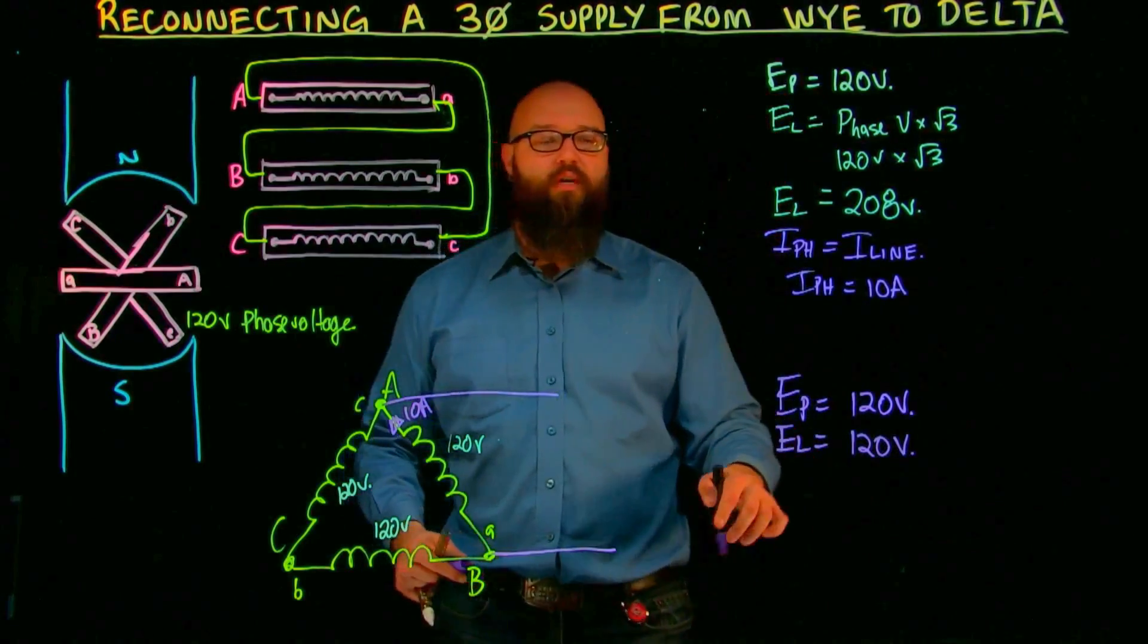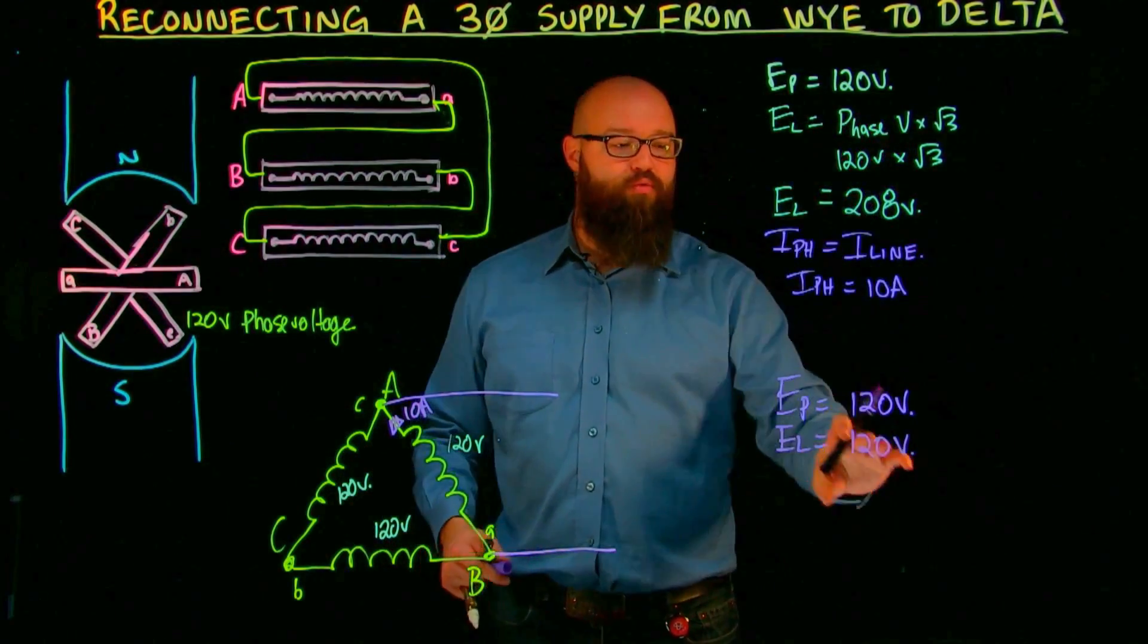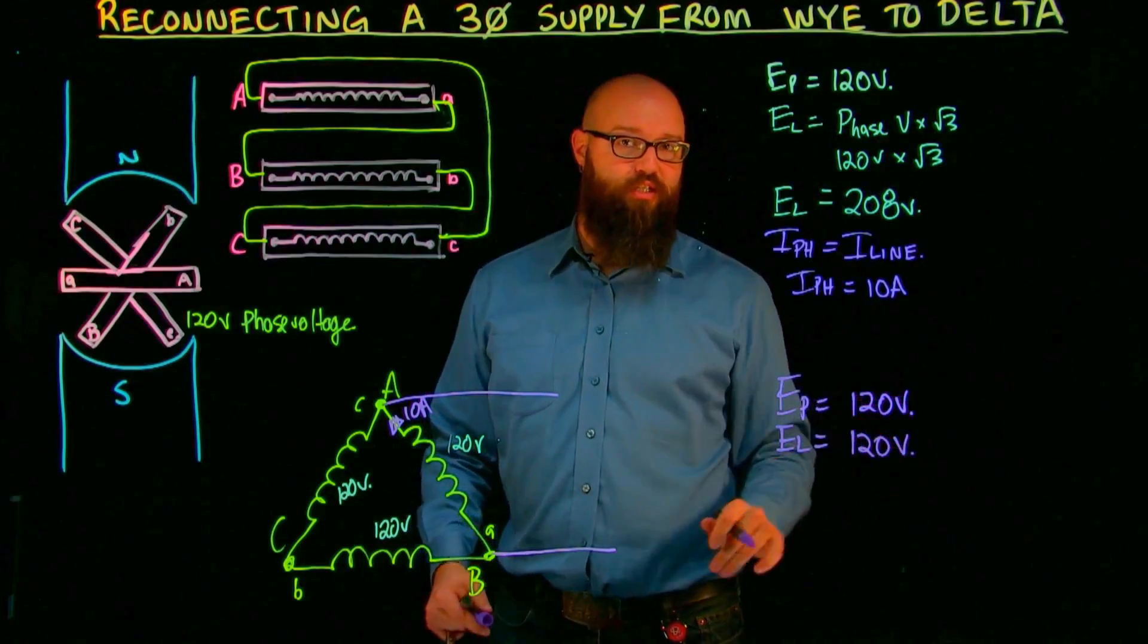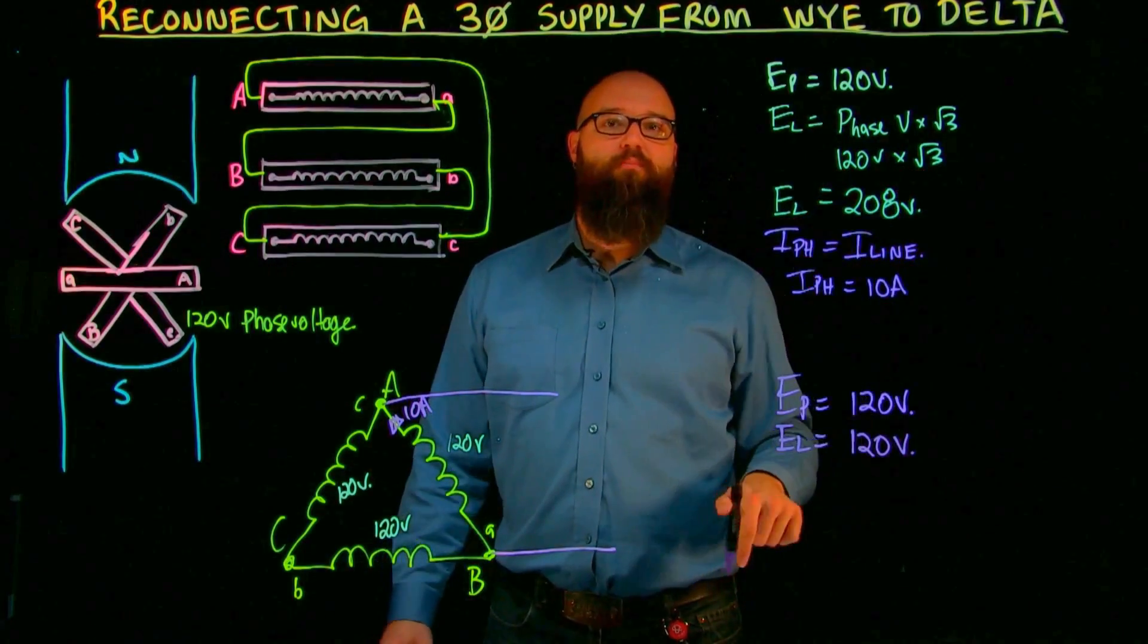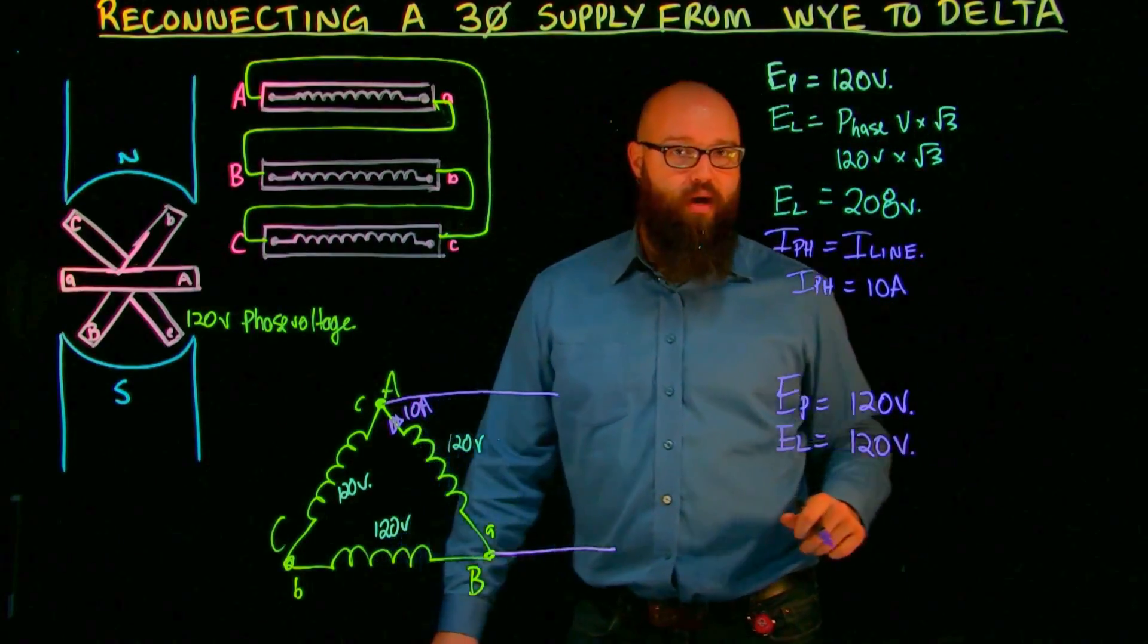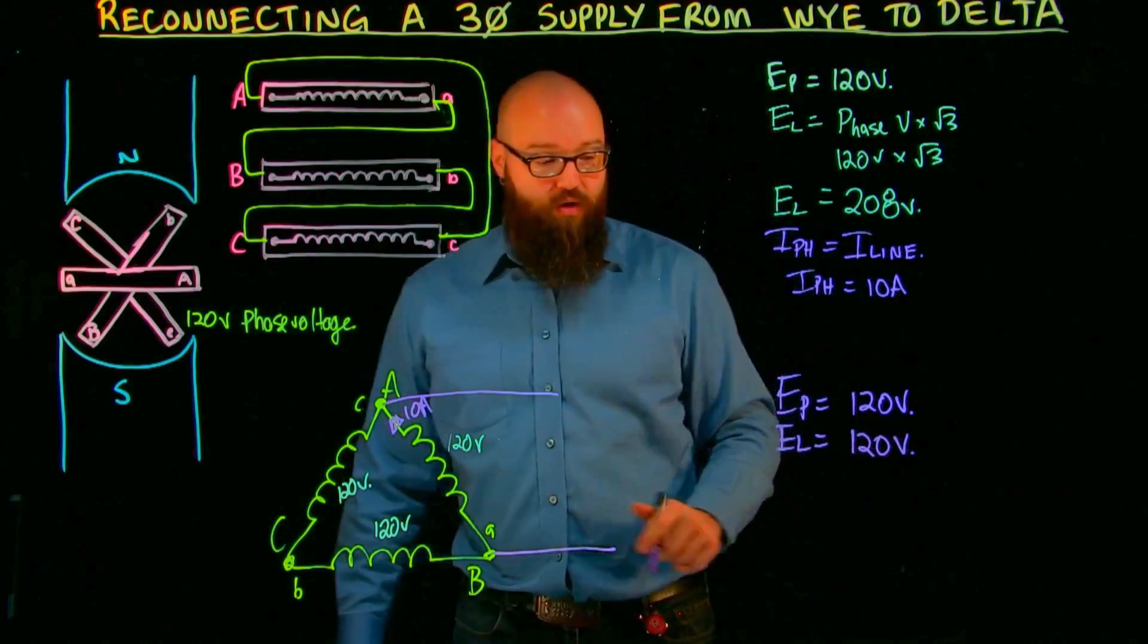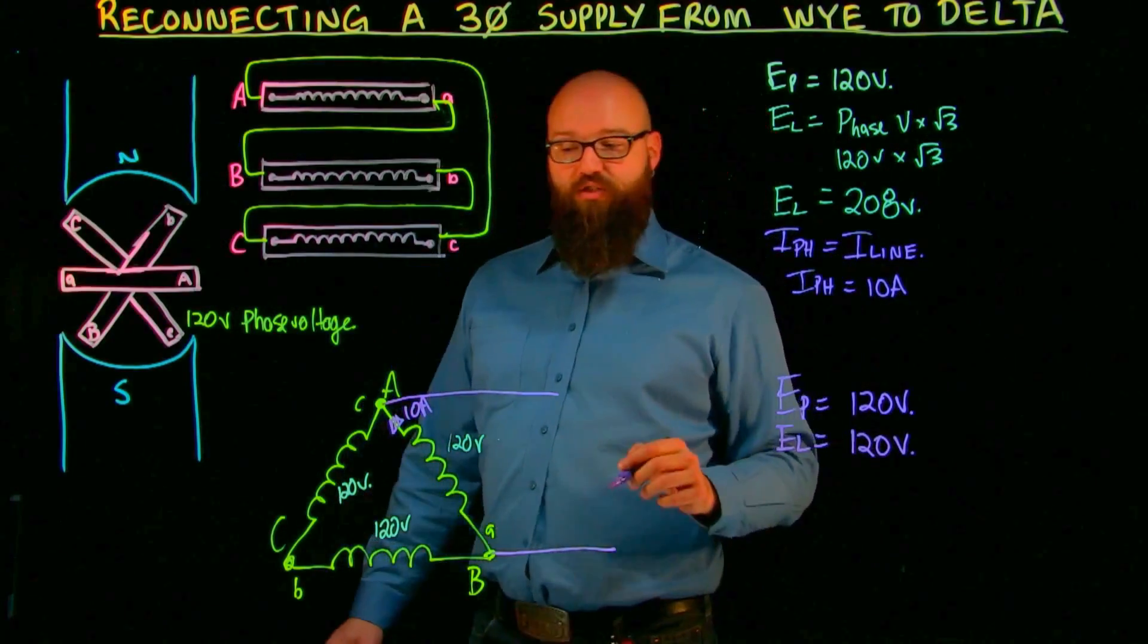So we can say that E line is also equal to 120 volts. So the first thing you'll notice is that our line voltage is now root three smaller than it was when it was connected in a Y system.